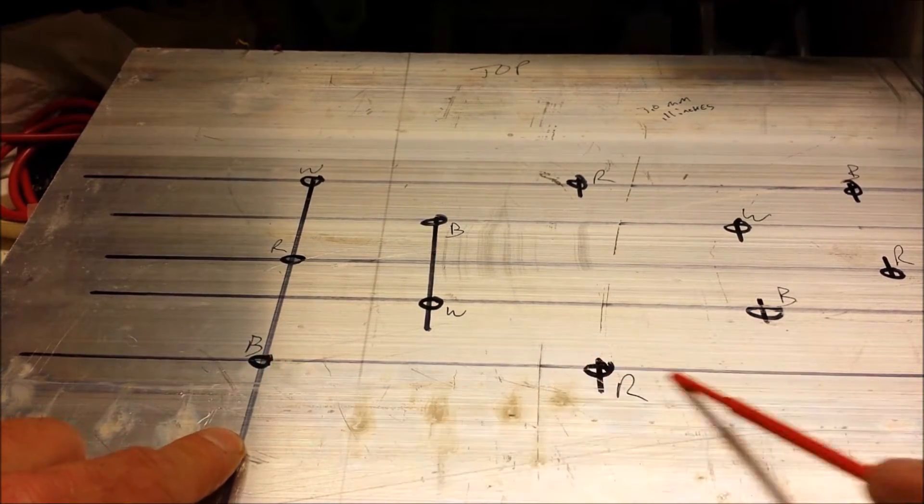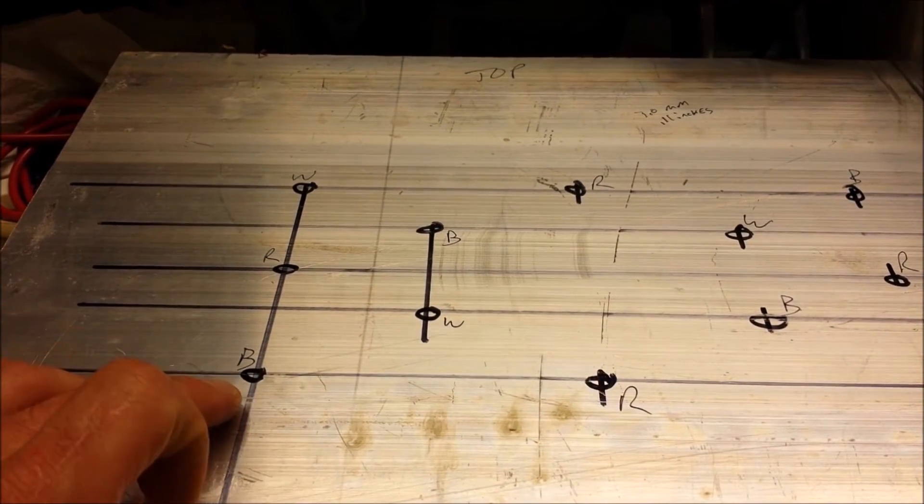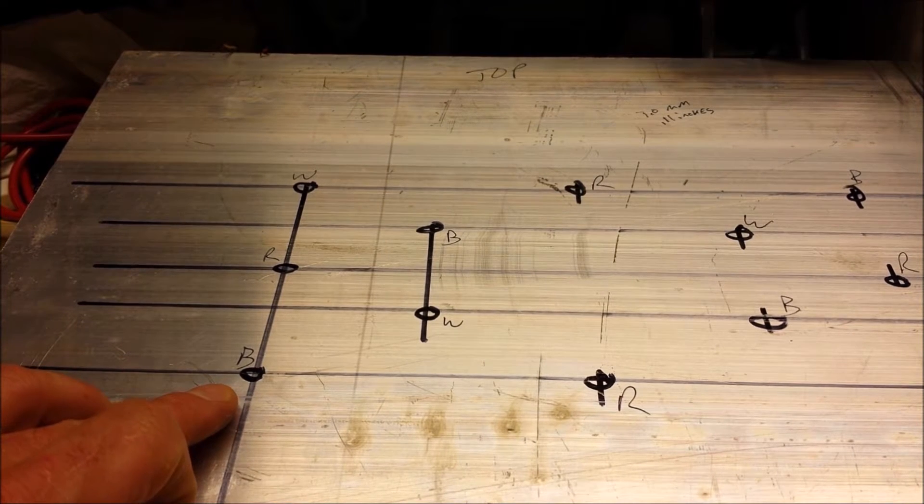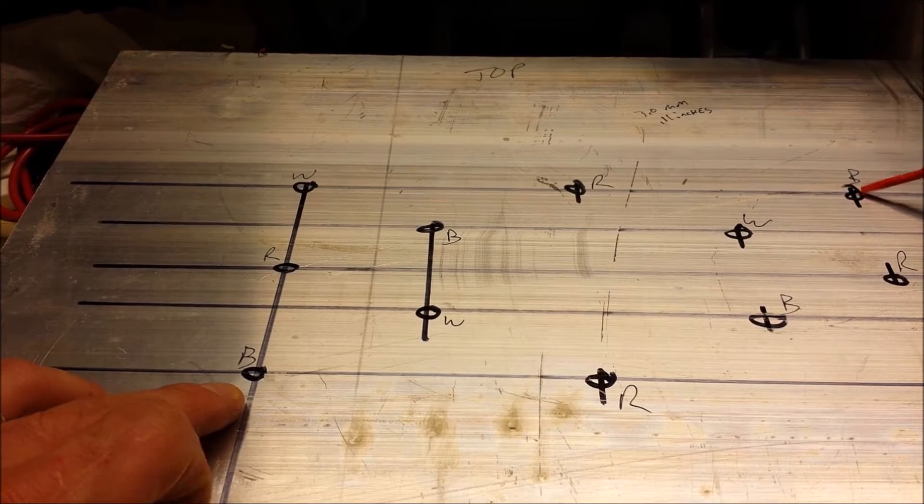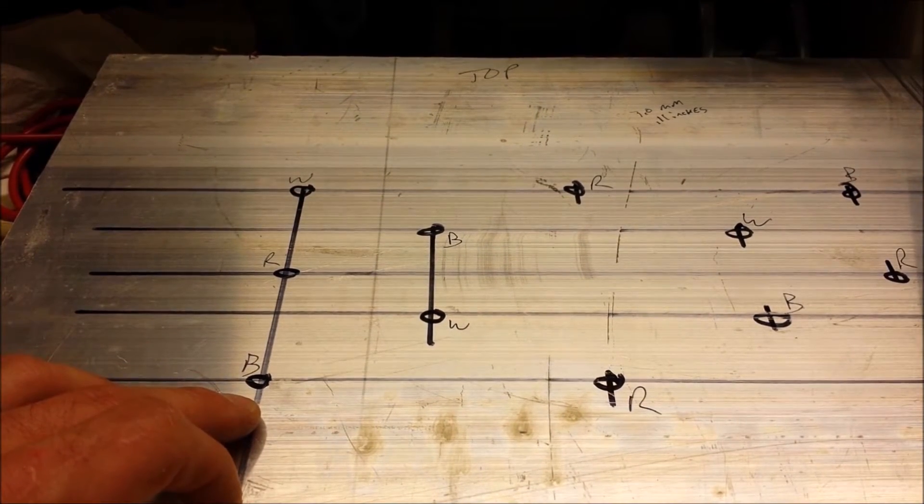So just above the water line I have the first row of LEDs, and then I just evenly spaced them between the top of the water line and the top of the Algae Turf Scrubber screen. So that way I have a nice spread of light.